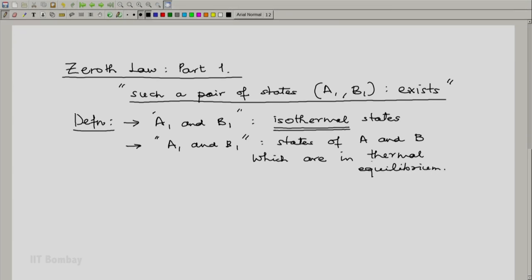So here we are defining the words thermal equilibria. When we say states A1 and B1 of the two systems A and B respectively are isothermal, which means that the two states are in thermal equilibrium with each other.